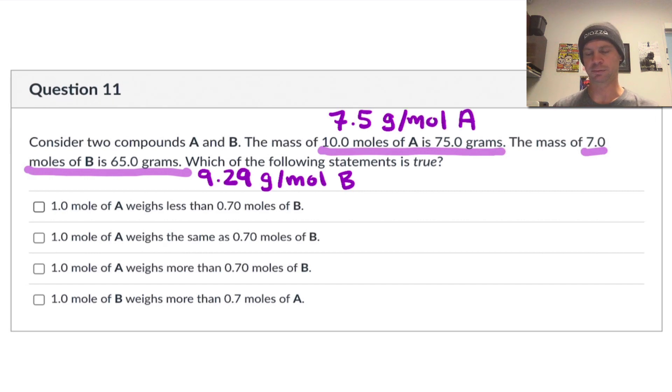These values are gonna help us solve the problem, as we'll see. And we're asked which of the following statements is true. We have 1 mole of A weighs less than 0.7 moles of B. 1 mole of A weighs the same as 0.7 moles of B. 1 mole of A weighs more than 0.7 moles of B. And then lastly, 1 mole of B weighs more than 0.7 moles of A, which is actually different from the first three statements, although it takes a little bit to wrap your mind around that. First thing we should say here, logically speaking, is that the first three statements cover all possibilities for the relative masses of these samples of A and B. So one of those three has to be true.